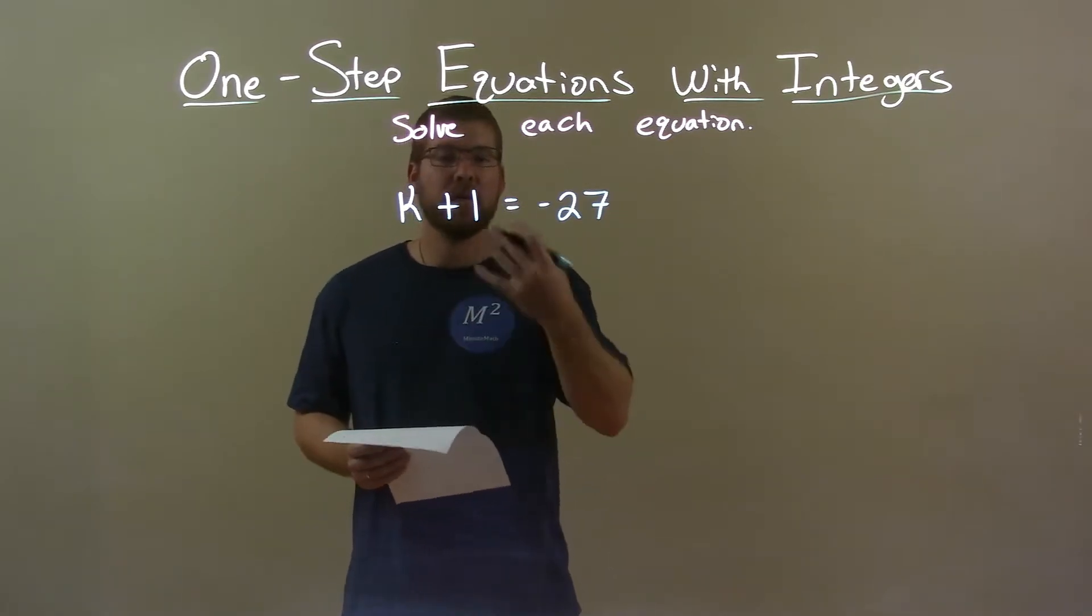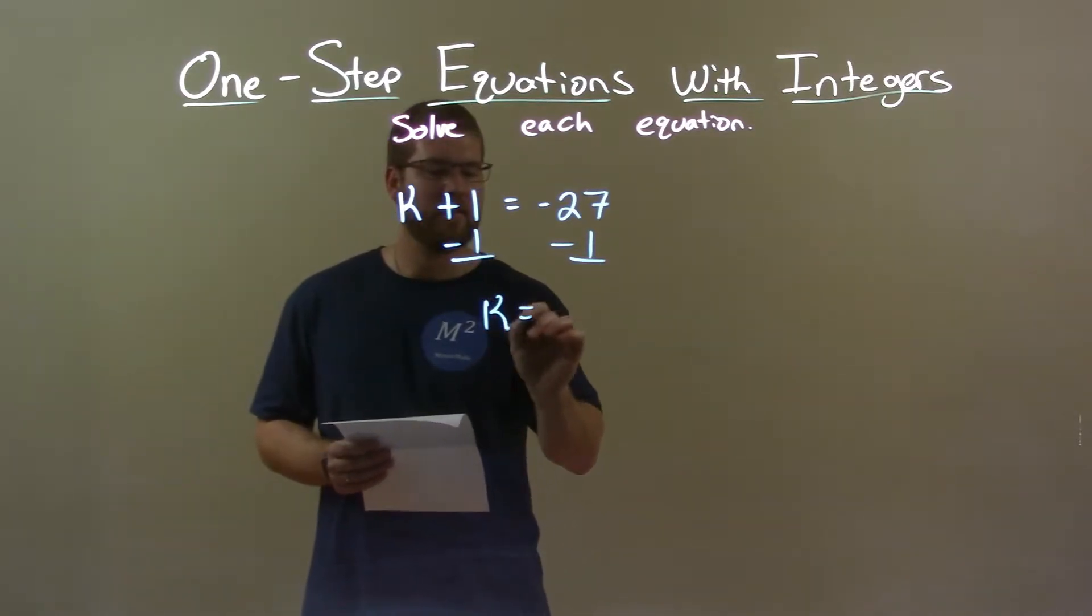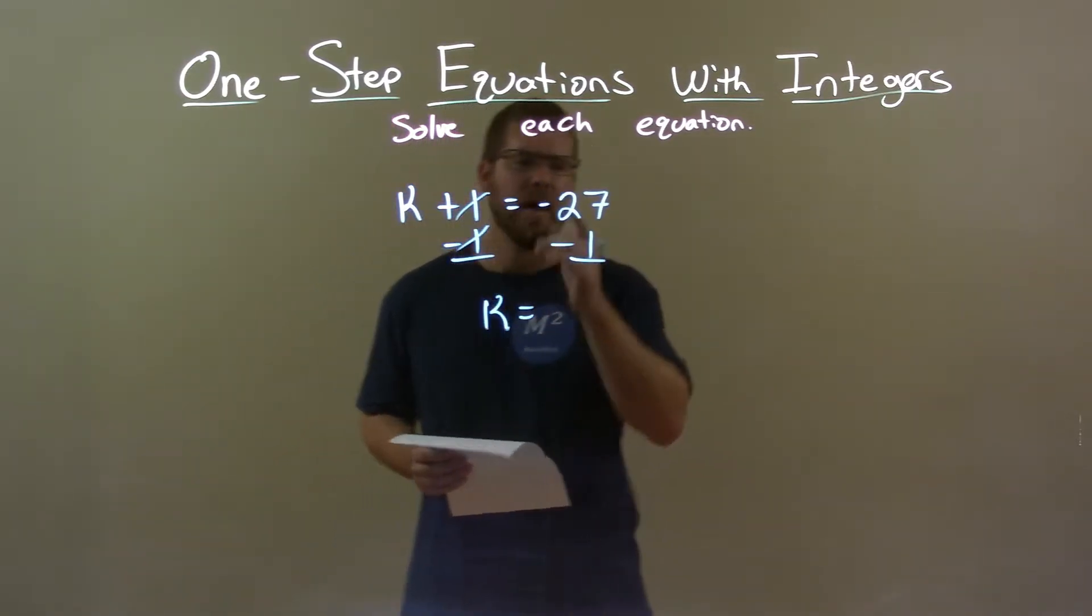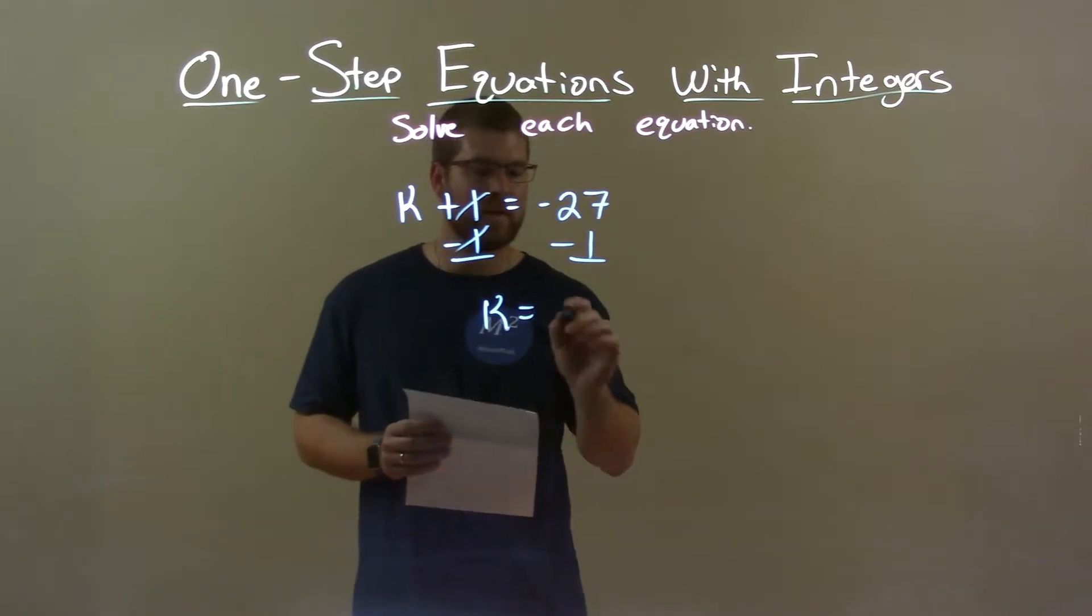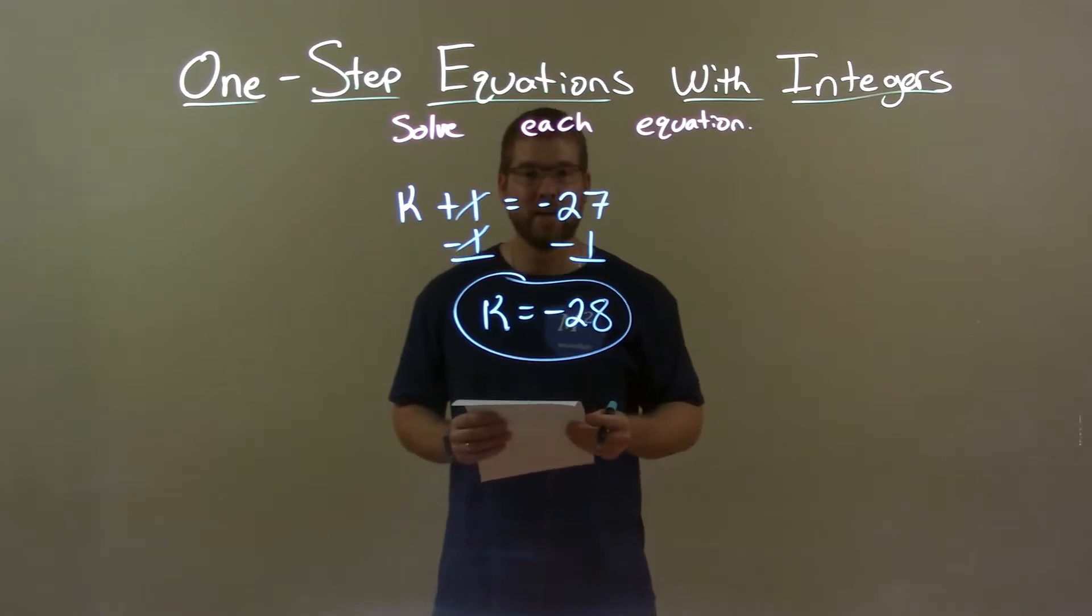Opposite of addition is subtraction. So if I subtract 1 from both sides, I'm left with k by itself. The ones will cancel. Negative 27 minus 1 is negative 28. And so our final answer is k equals negative 28.